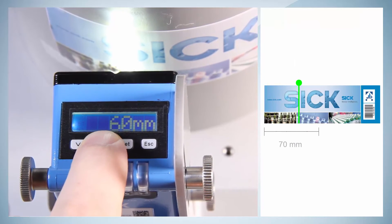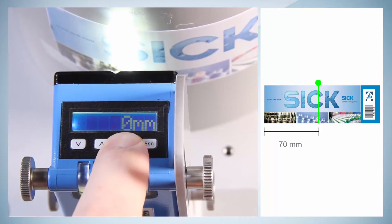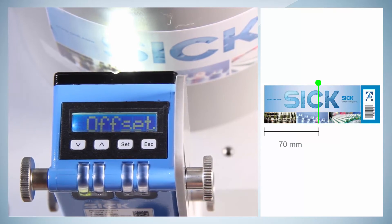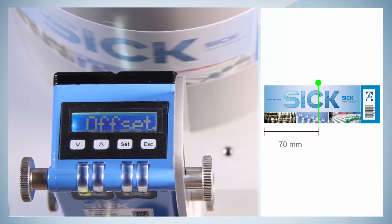As an example, 70 mm is chosen as an offset from the switching point. The setting has to be confirmed by the Set button. The switching point has now been moved successfully by 70 mm.